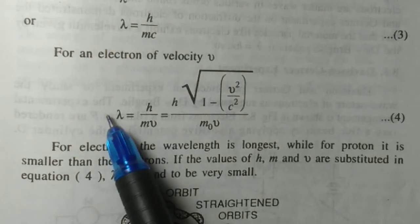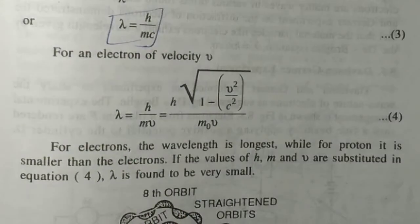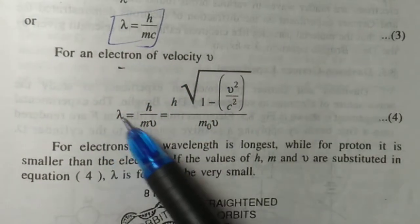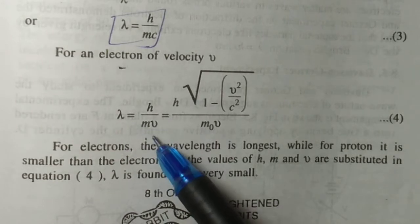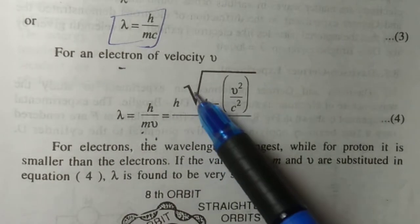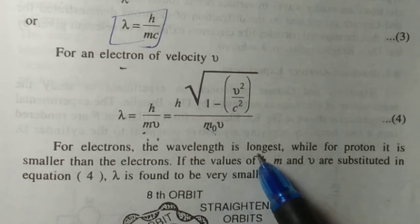This relation gives the wavelength of a photon which has velocity nearly equal to c. For an electron of velocity v, we can write λ = h/mv, where m is m₀ upon square root of 1 minus v²/c². For electrons, the wavelength is long because m₀ is very small.